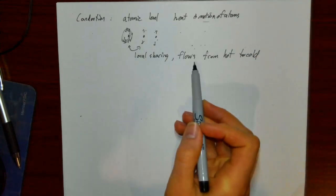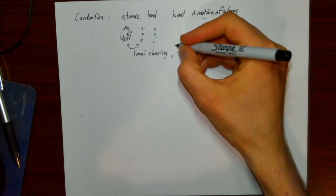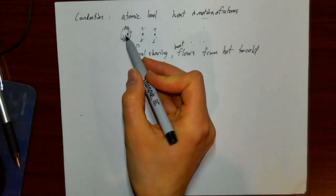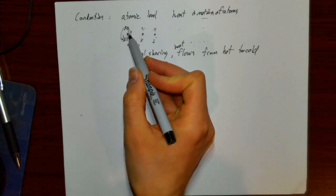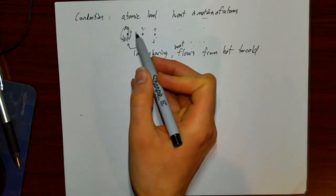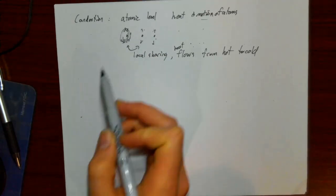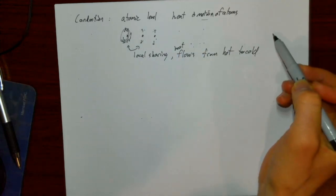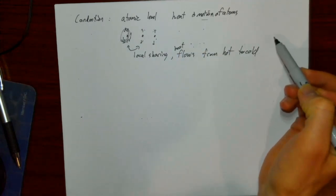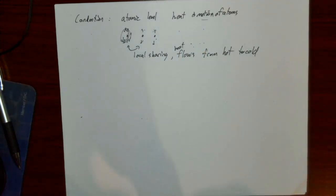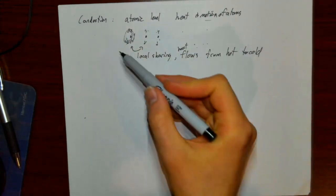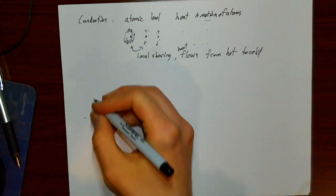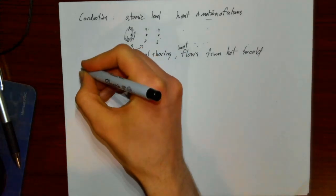This heat flows even though macroscopically these atoms aren't really moving much beyond their local space. It's not like a hot atom jumps all the way to the cold side — its vibration is transmitted even though the atoms themselves are not physically moving far. We can contrast this to convection.